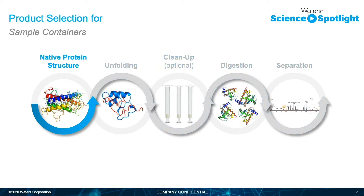The first product area is sample containers — for instance, the collection plates that live in the LC for injecting your samples. The plastics that the sample interacts with are often an afterthought. However, because these samples are indeed interacting with the surface of the plastic, it's important to consider it in an effort to protect the samples that we just worked so diligently to prepare.